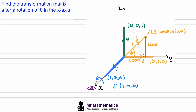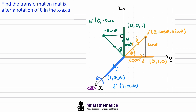When we rotate k, this will be the transformed image of k. Its x value is still zero, but the y value is now negative. The y value will be the opposite length, so negative sine theta, and the z value will be the adjacent length, cos theta. So the transformed image of k will have coordinates (0, negative sine theta, cos theta).